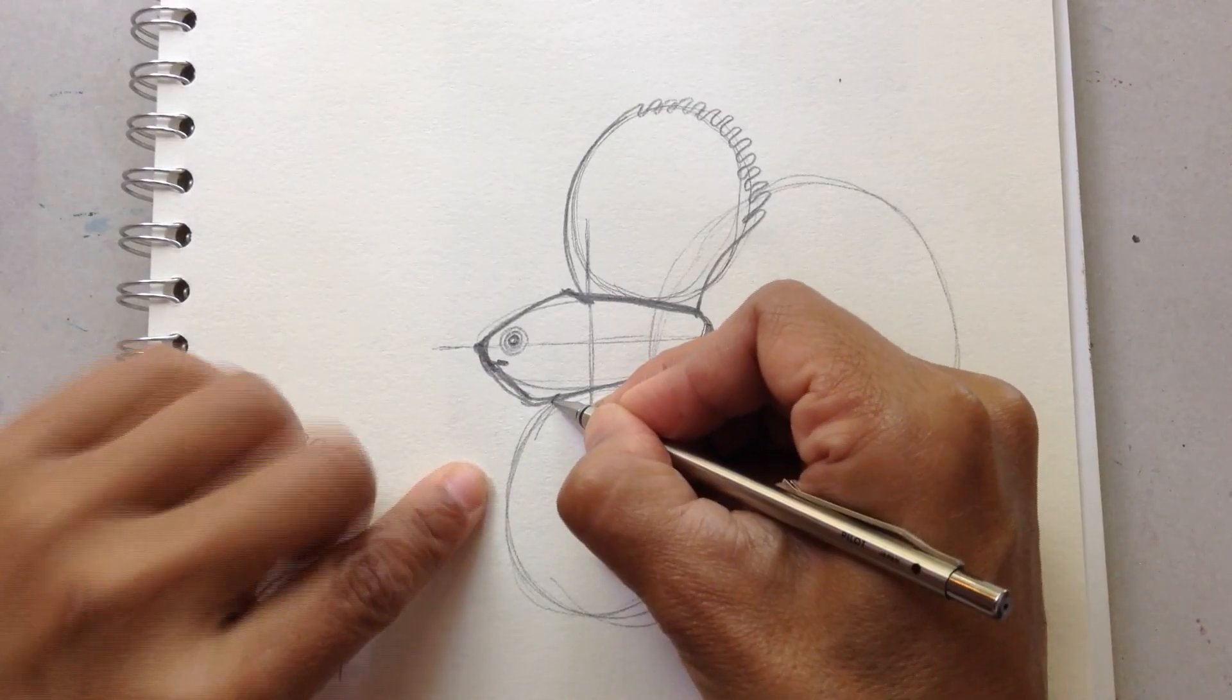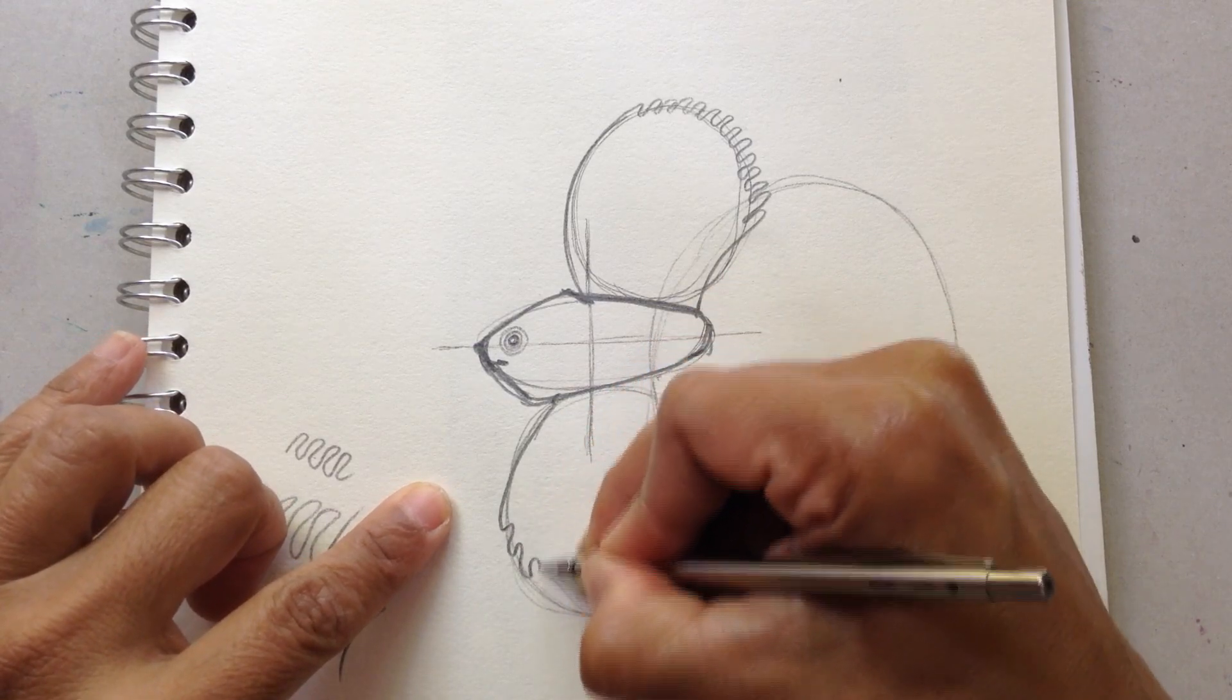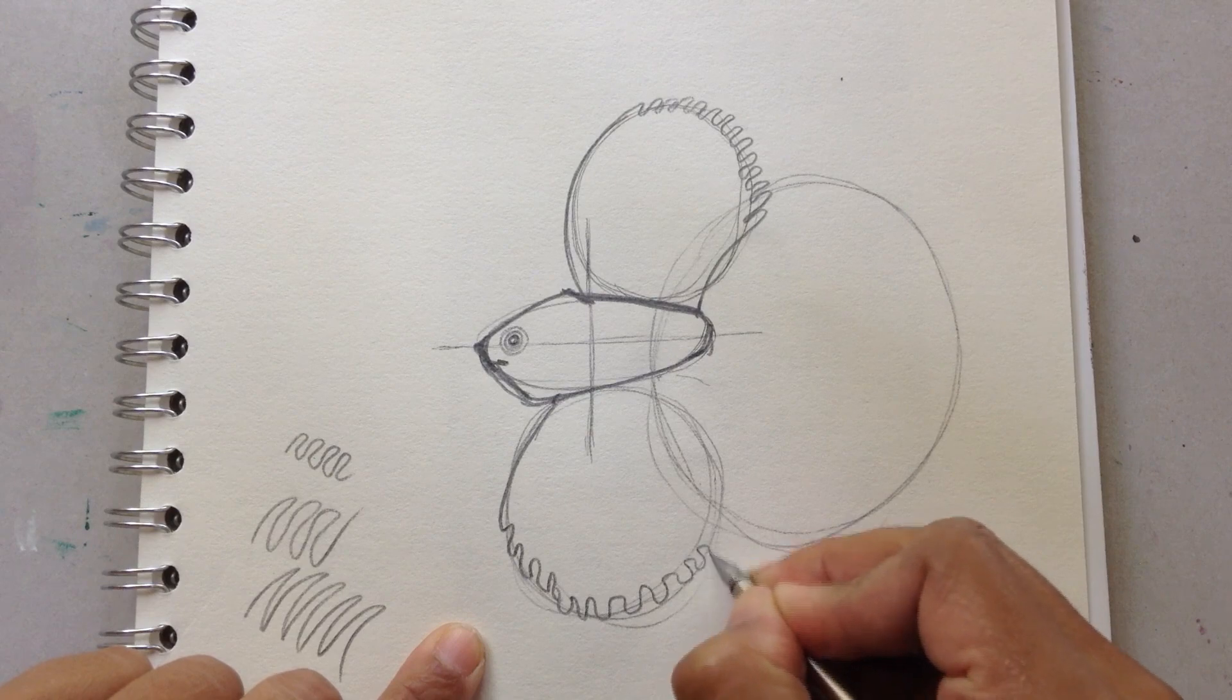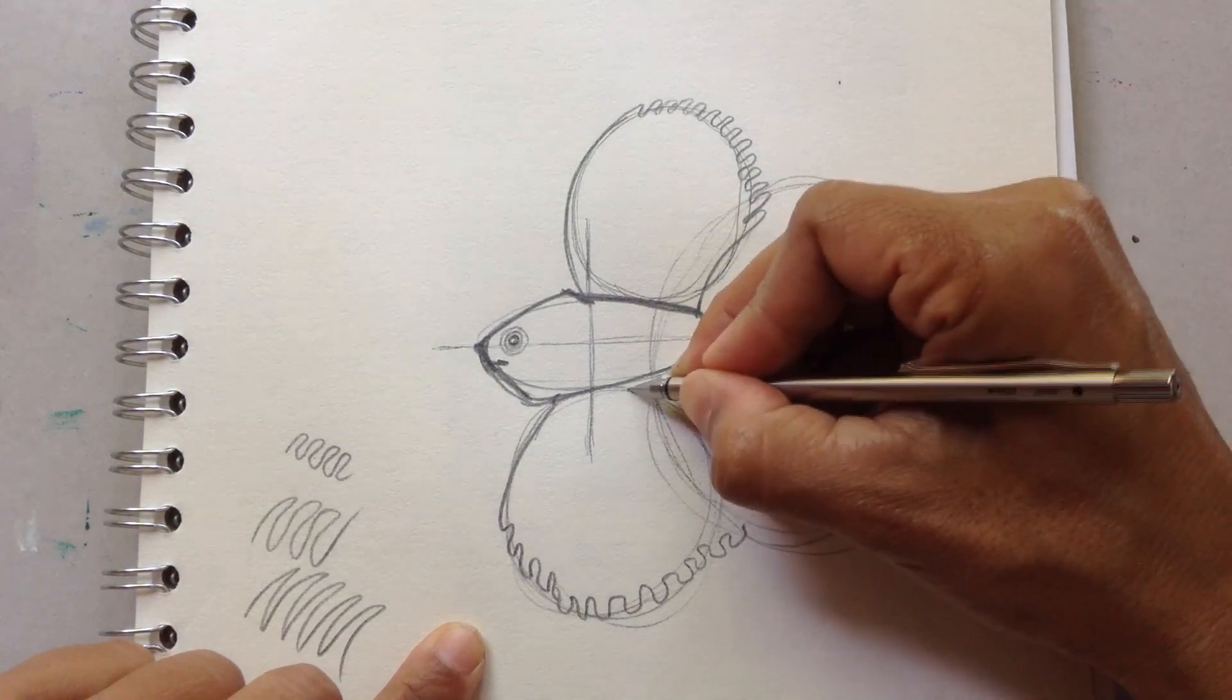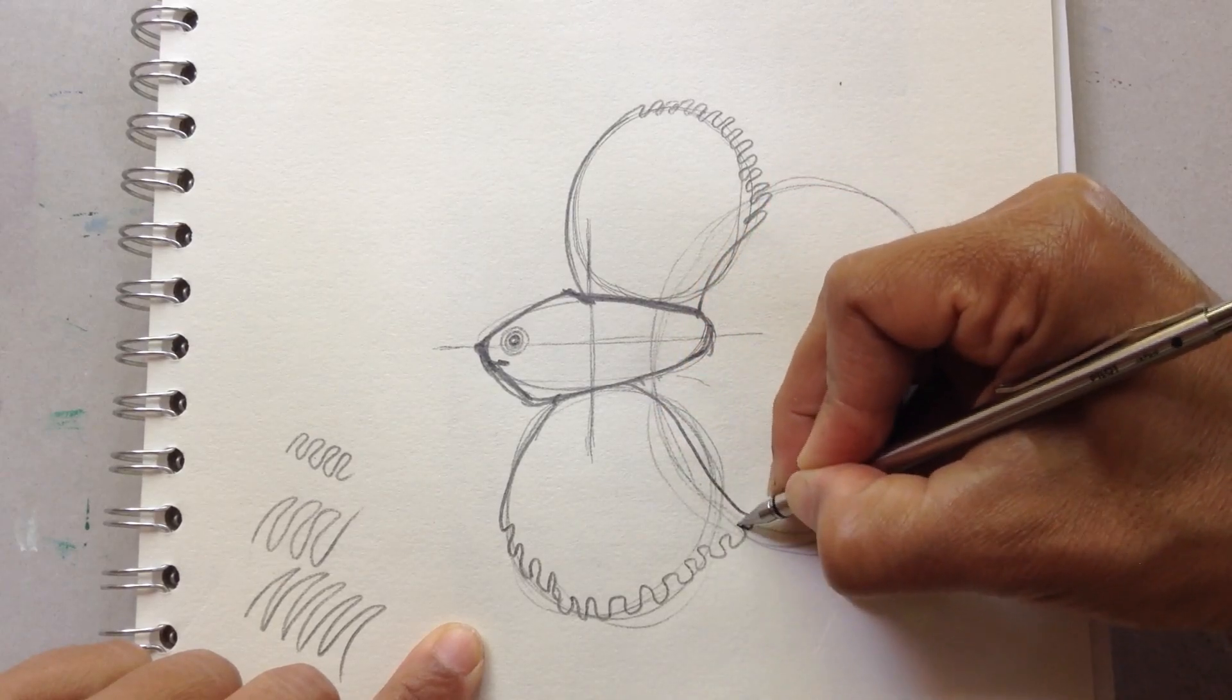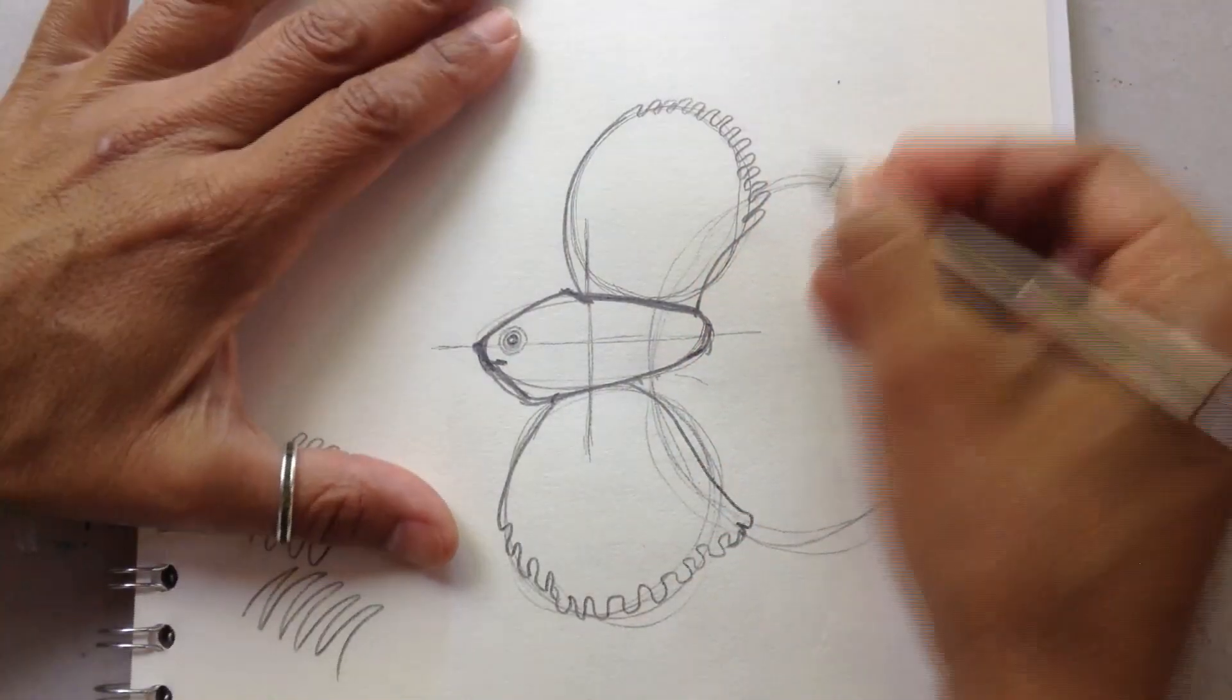Now I'm going to do the lower fin. And again I'm doing these curves here. And using here this line I can guide myself to make the fin look like this.